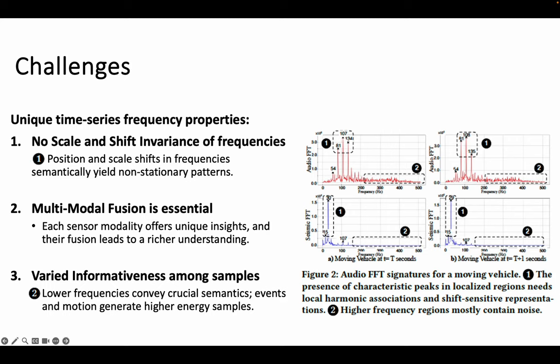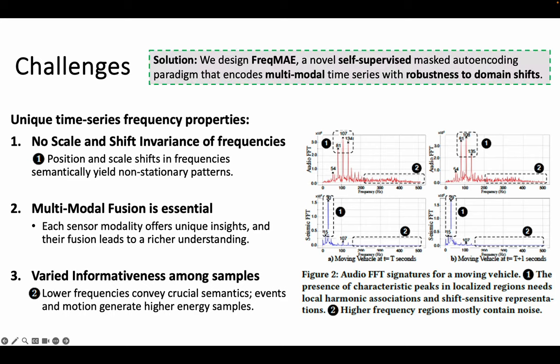Third, sensor data samples may vary in informativeness due to their frequency bands and collection times. For instance, in tasks like object classification, lower frequencies often hold more semantic value, while higher frequencies tend to be noise. Moreover, samples from events or motion capture more important patterns with higher energy content, compared to those from periods of inactivity or background noise.